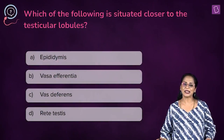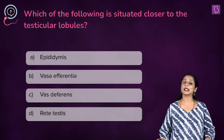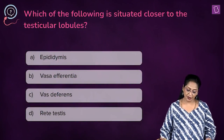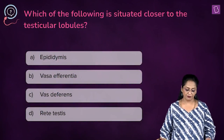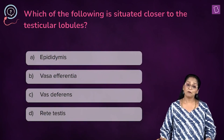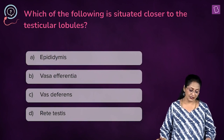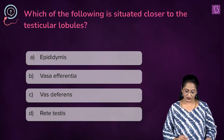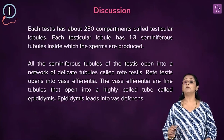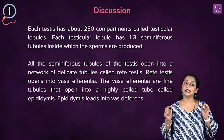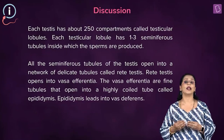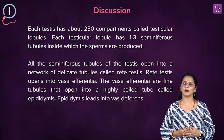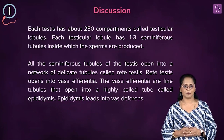Next question: which of the following is situated closer to the testicular lobules? A. the epididymis, B. vas deferentia, C. vas deferens, D. rete testis. The testis is the organ where spermatogenesis — the formation of sperms — takes place.